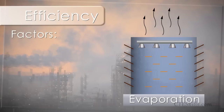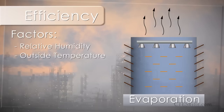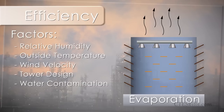Many factors can affect the efficiency of the evaporation in a cooling tower. Things such as relative humidity, outside temperature, and wind velocity can affect the efficiency. Even the design of the tower, water contamination, and outside equipment will also play a part.